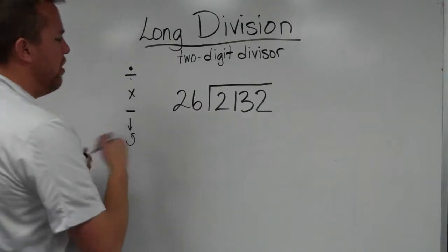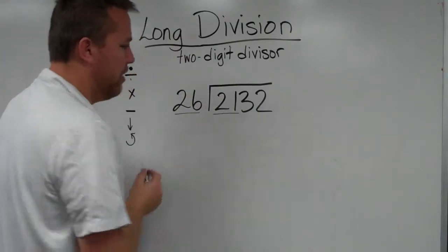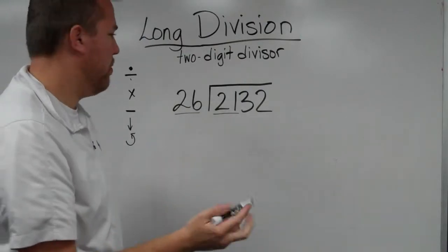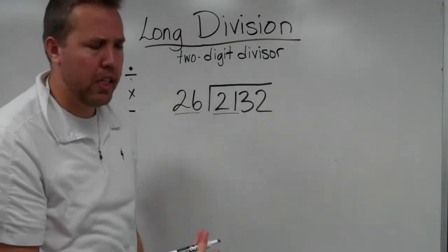Two-digit divisors. If we have two digits right here, that means we need to go into two digits right there. Every time, that's where we start because two digits will never fit into one digit, so it's just being logical.